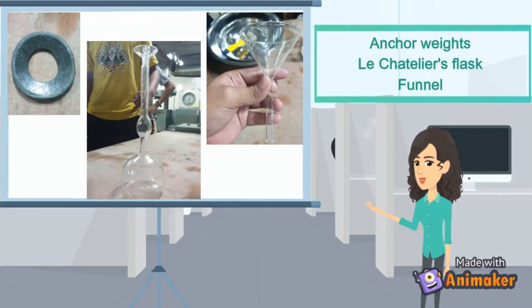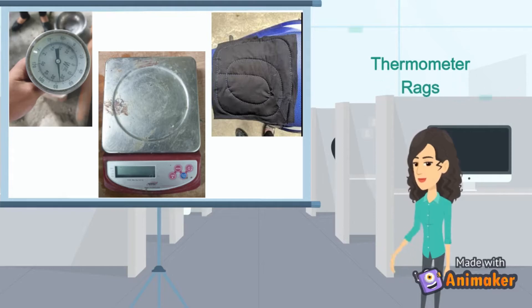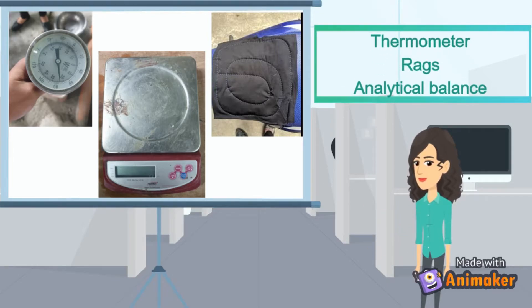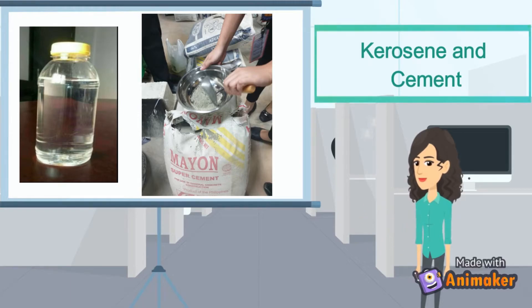Anchor weights, Le Chatelier's flask, funnel, thermometer, rugs, analytical balance, kerosene, and cement.